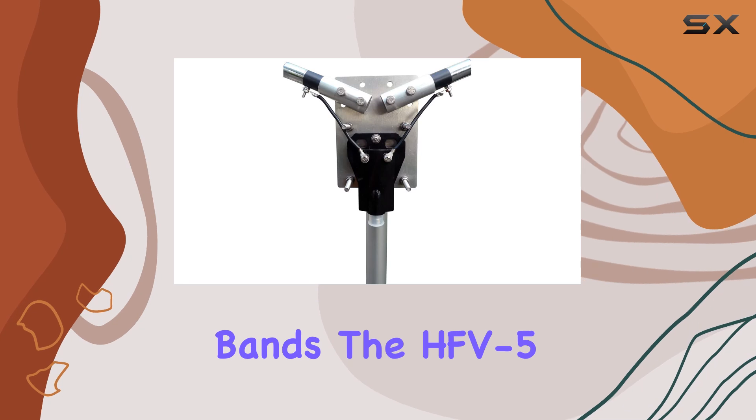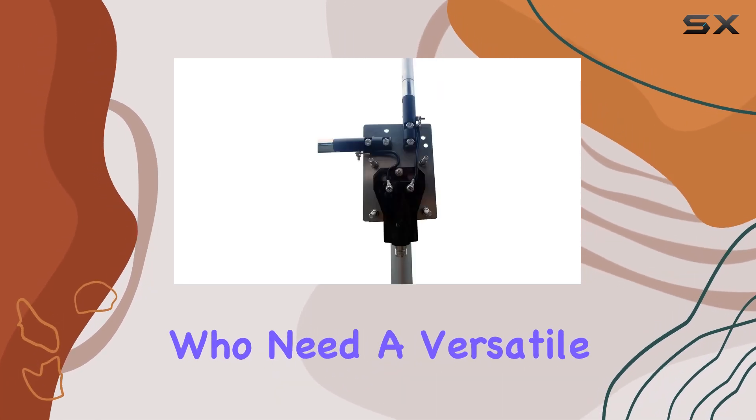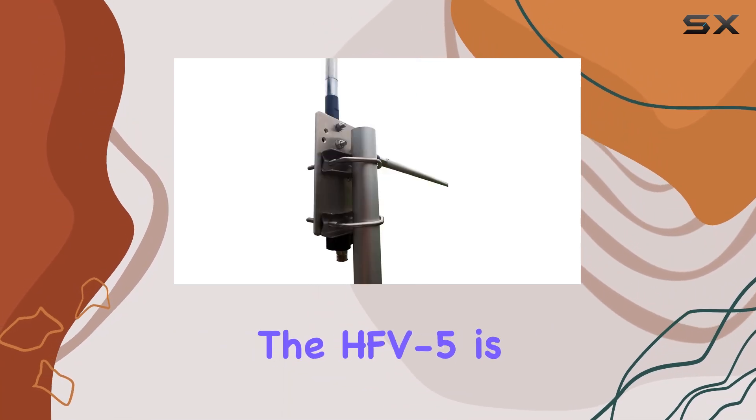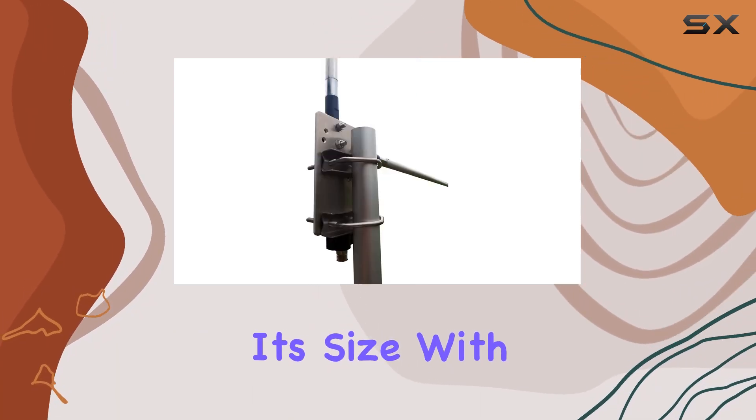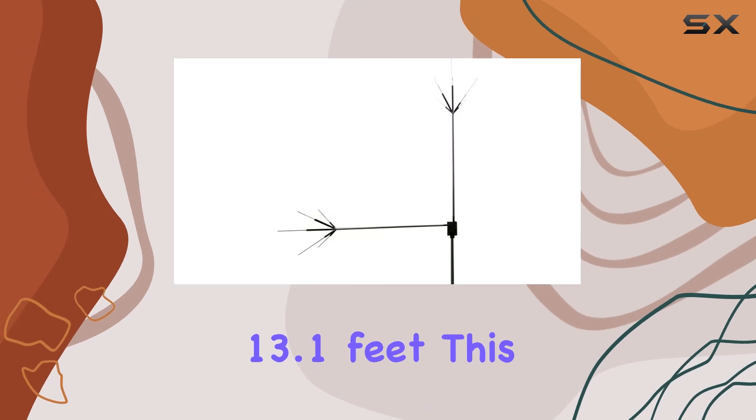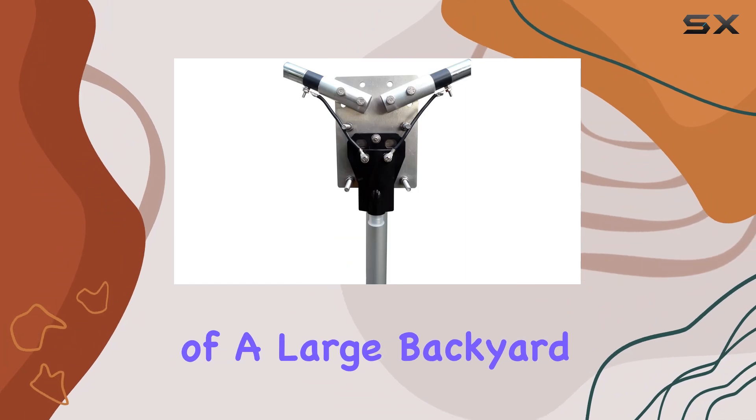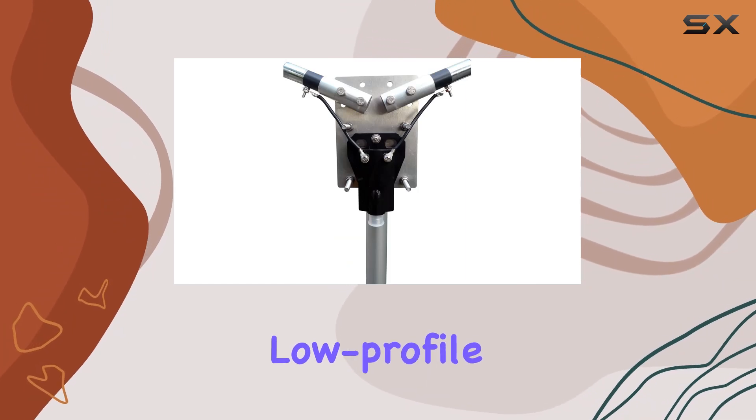The HFV5 is an intriguing option for ham radio enthusiasts who need a versatile yet compact solution. One of the standout features of the HFV5 is its size. With an assembled length of just 13.1 feet, this antenna is particularly suited for those who may not have the luxury of a large backyard or for those who prefer a low-profile setup.